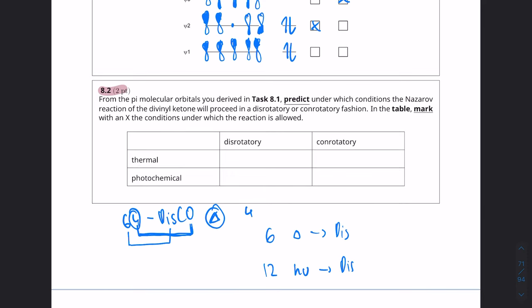So to figure out whether or not thermal is disrotatory or conrotatory we look at the fact that we have 4n electrons that associates to conrotatory and thermal. So that means that thermal conrotatory is going to be the correct one. And then photochemical is just going to be switching it so that's just going to be disrotatory.